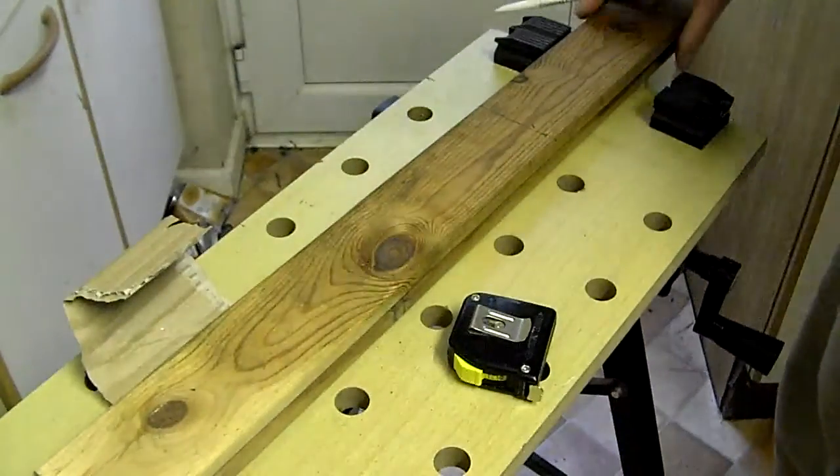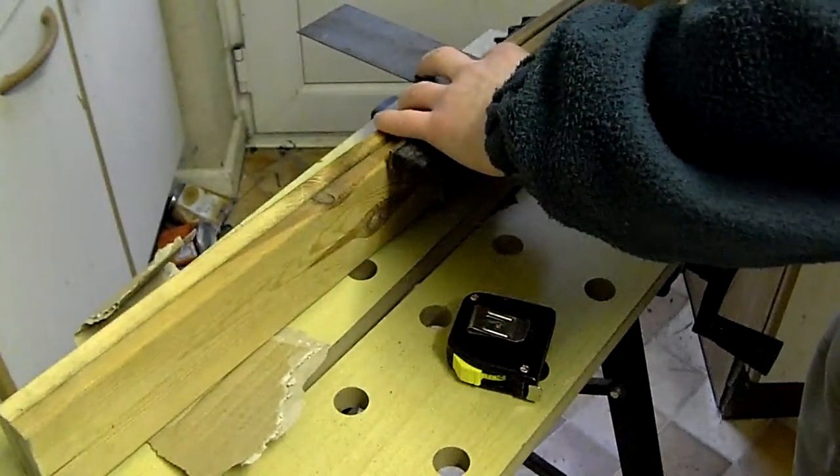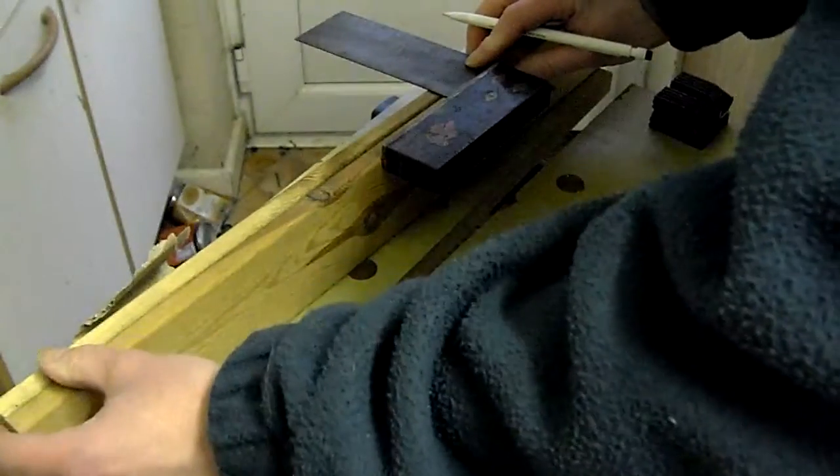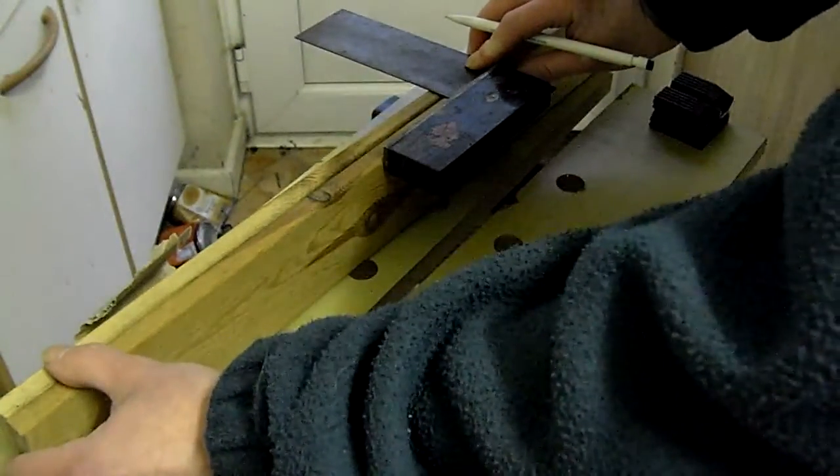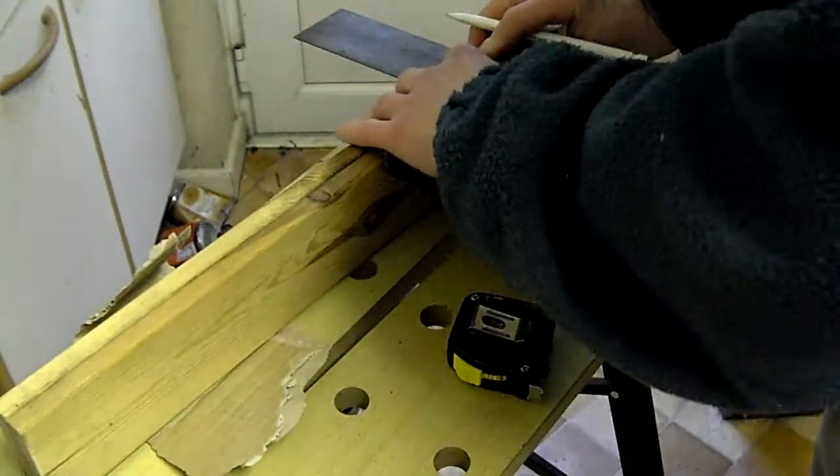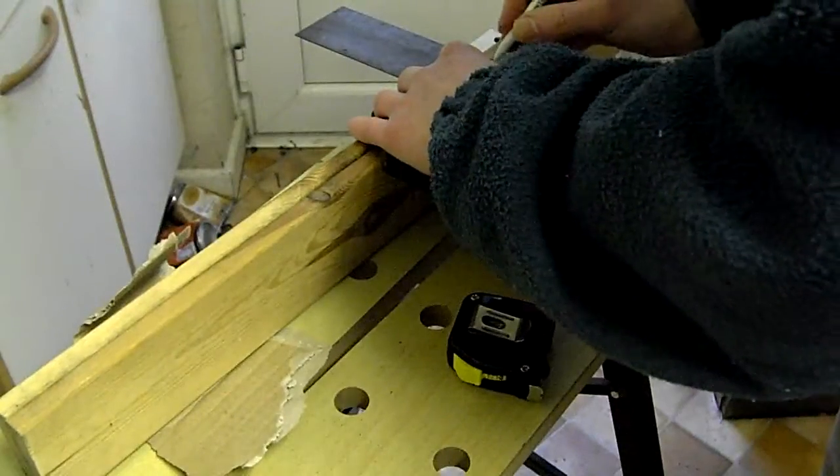There we go, so I've marked a line across there. I'm just going to turn it round and now you can see the mark at the top. I'm just going to mark it off, making sure that the ends there are level. I'm just doing that roughly with my fingers because I don't need to be too accurate at the moment.